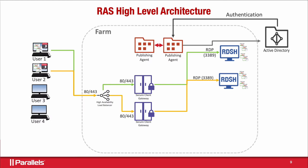End users come into the system over port 80 or 443, not port 3389. The load balancer uses round-robin — first user goes to gateway one, next to gateway two, and so on. The load balancer does front-end load balancing, directing connections between secure client gateways. Parallels is fully load balanced end to end. The seemingly random lines to different session host servers represent resource-based load balancing on the back end.